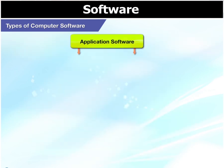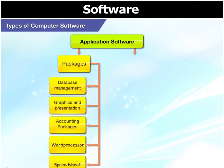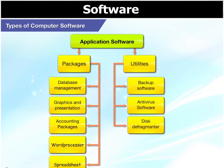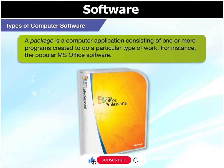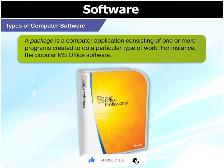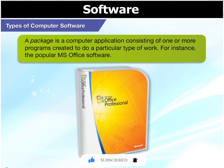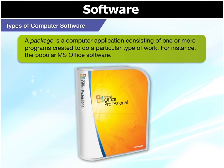Application software can be classified into two categories: packages and utilities. A package is a computer application consisting of one or more programs created to do a particular type of work, for instance the popular MS Office software.